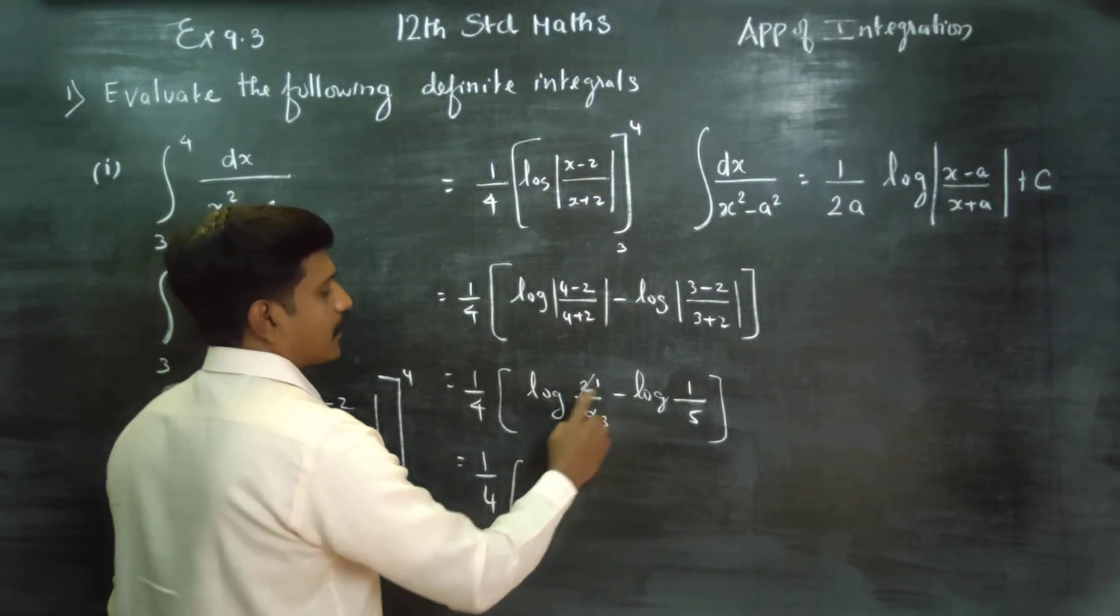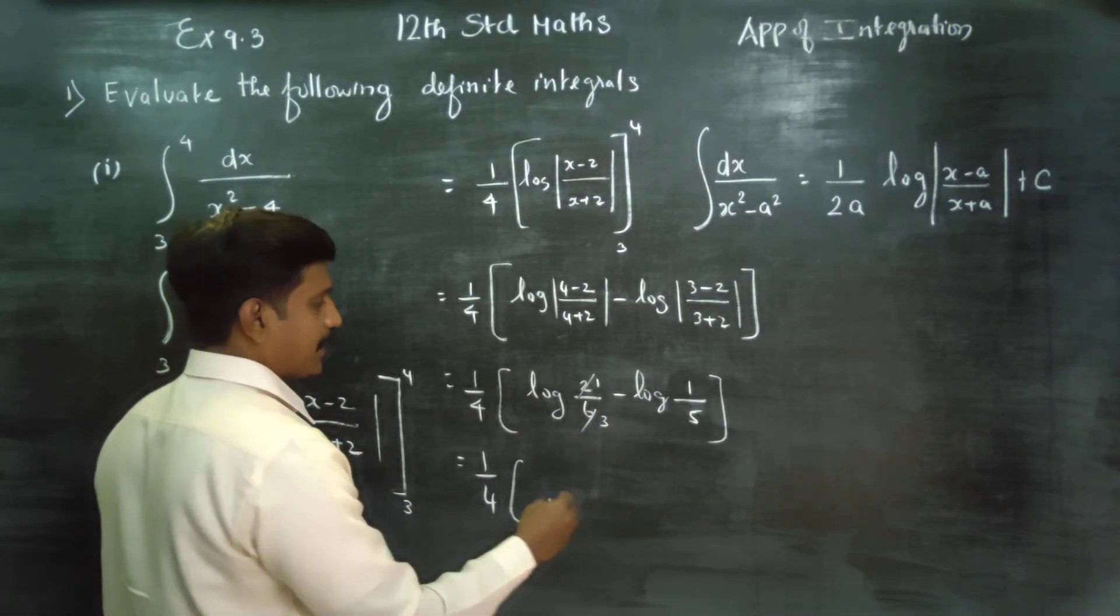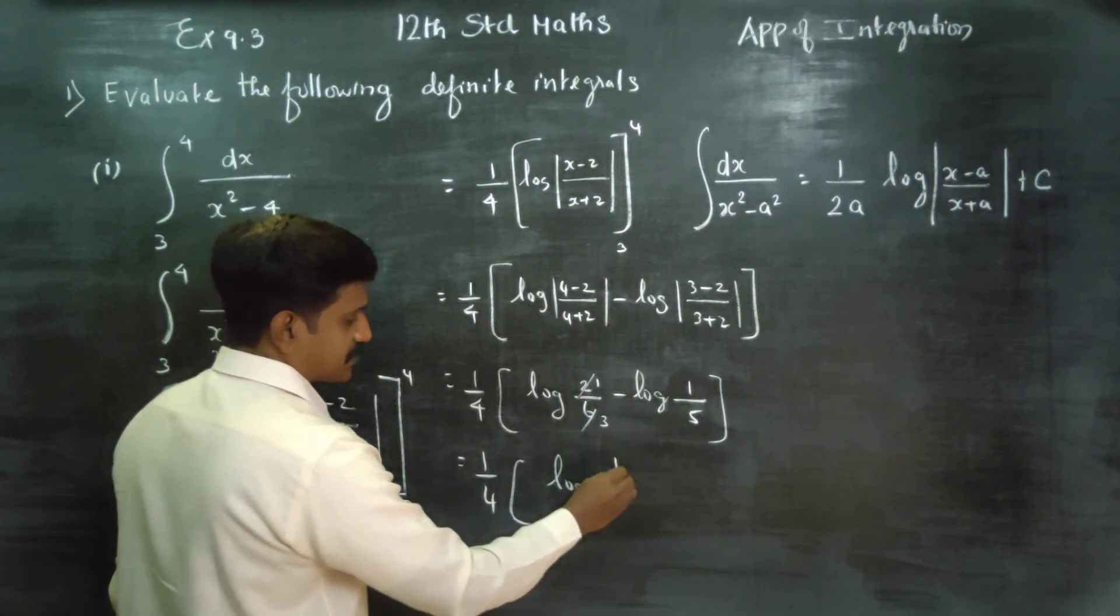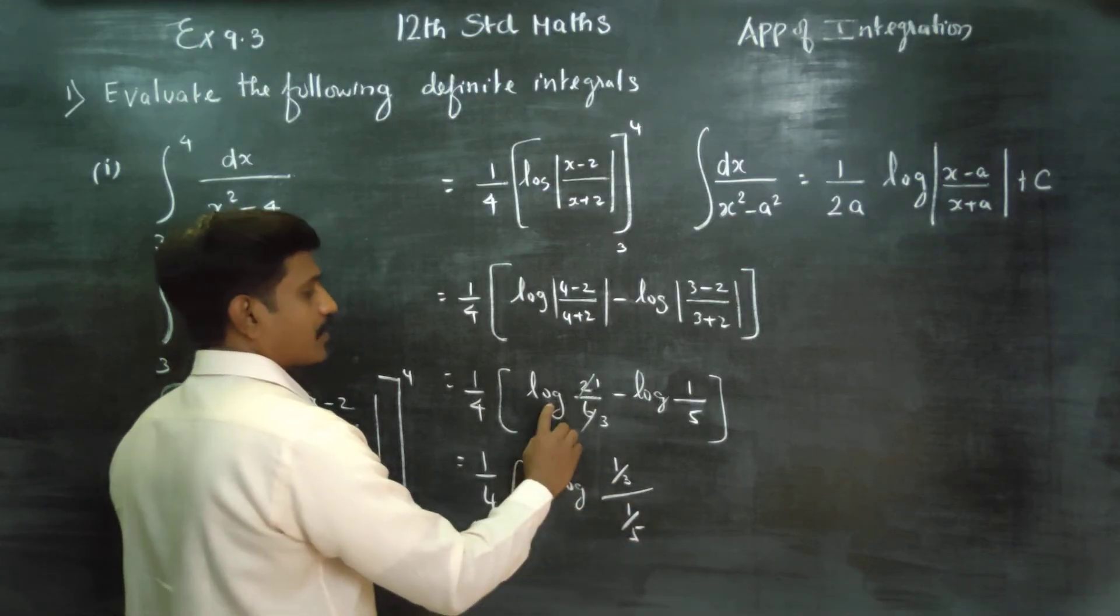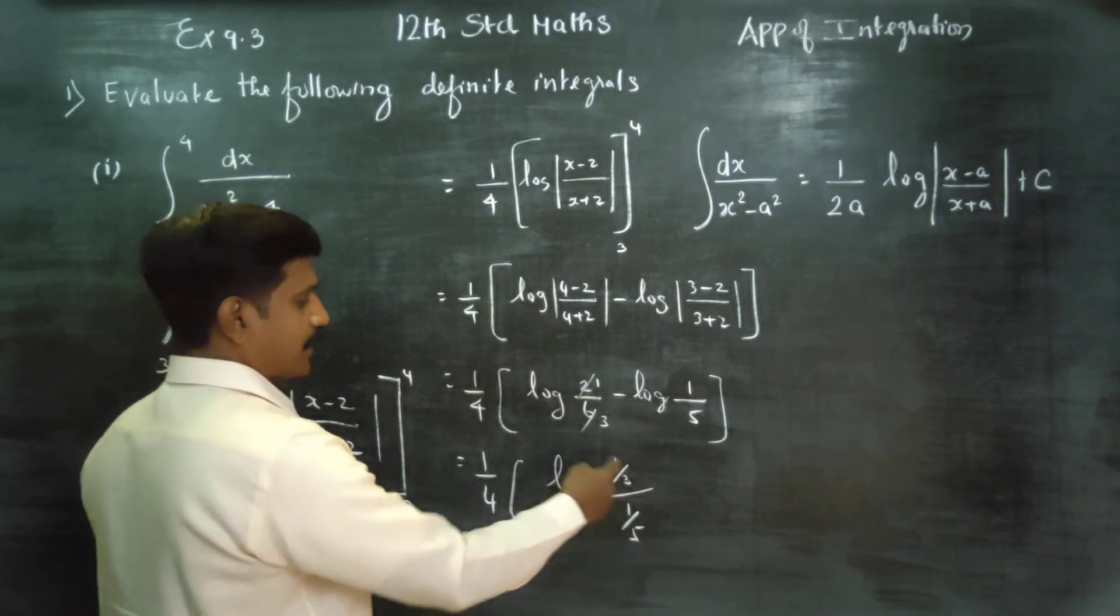Log a minus log b equals log a by b. Minus division, 1 by 3 divided by 1 by 5. Log a minus log b is equal to log a by b.